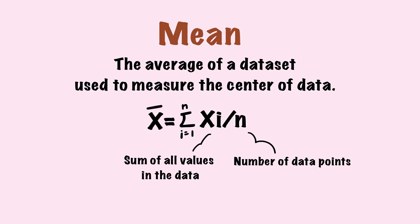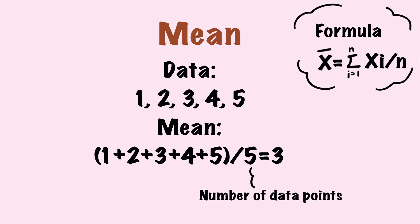First, mean is the average of a data set. We divide the sum of all values by the number of data points. Say we have data 1, 2, 3, 4, and 5. The mean is 1 plus 2 plus 3 plus 4 plus 5, divided by 5, which is the data size.